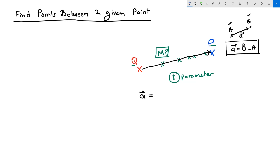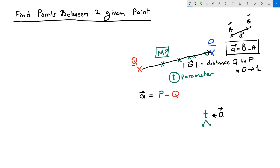A equals P minus Q. The length of vector A is equal to the full distance between Q and P. Now if I multiply vector A by a factor T, and constrain T to be between 0 and 1, I will get a vector V that has a partial, smaller length of vector A. So V equals T times A — let's call that equation 1.